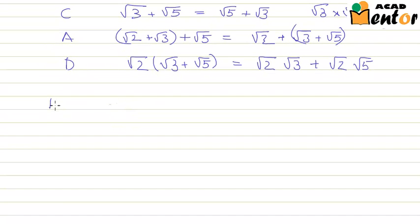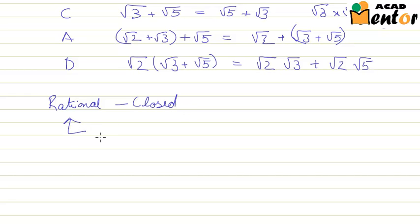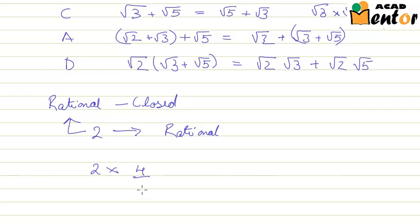We know that rational numbers form a closed set. That means any operation on any two rational numbers always gives you a rational number. For example, 2 multiplied by 3 equals 6, and 4 divided by 71 — both results belong to the set of rational numbers.